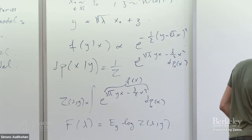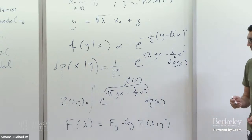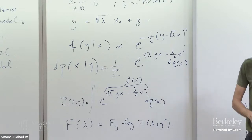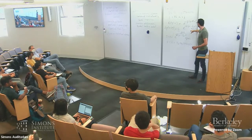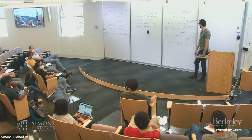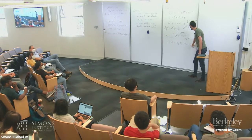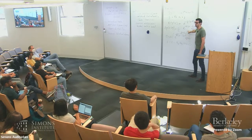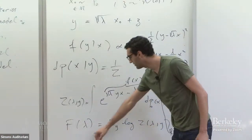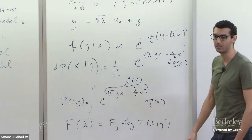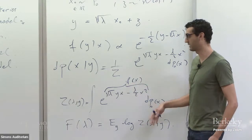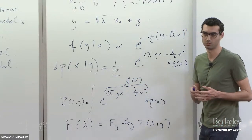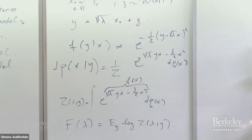A question was raised: does the free energy lose dependence on the distribution? The free energy — the log of the partition function — can be thought of as a kind of cumulant generating function. Its derivatives recover the moments of the posterior, so in principle you don't lose information about the posterior measure.